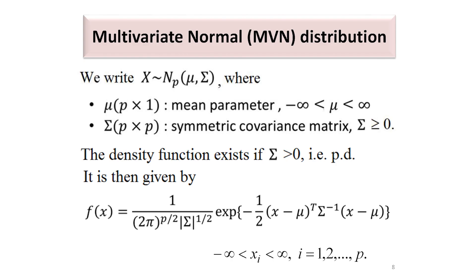Let us now talk about the multivariate normal distribution, of which the univariate and bivariate normal distributions are special cases. Say we have a random vector x with p components x1, x2, ..., xp. If x follows the multivariate normal distribution, we write it as Np(mu, sigma), where mu of order p×1 is the mean vector and sigma of order p×p is the variance-covariance matrix. Sigma should be at least positive semi-definite. When sigma is positive definite, the density function exists in the form given by f(x).